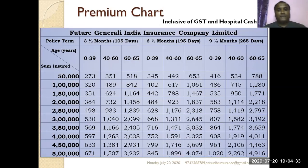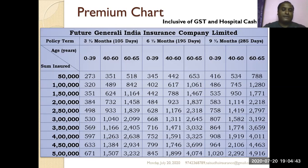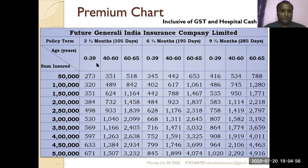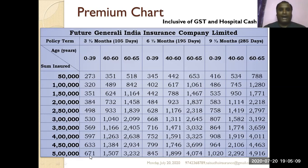The premium chart for Future Generali Insurance Company Limited shows a slightly different age grouping: 0 to 39, 40 to 60, and 60 to 65 — three categories. For the 0 to 39 age group, the premium is 671 rupees for 5 lakh sum insured for three and a half months. You can decide which company you want to go with — I can refer both companies to you as an advisor.